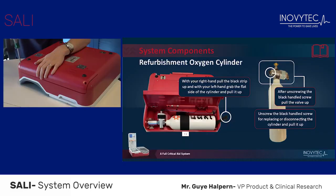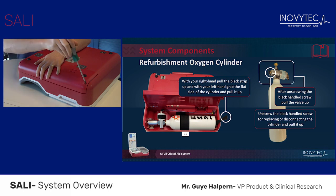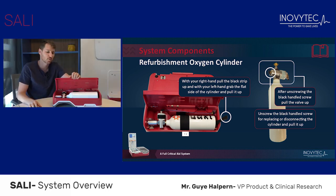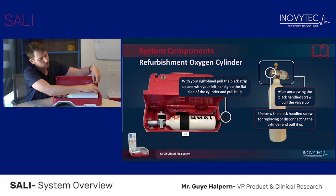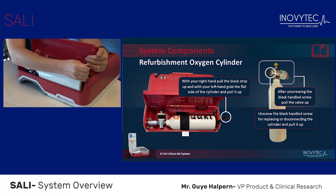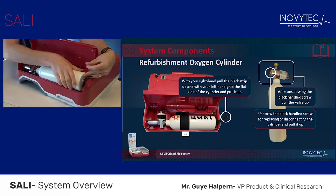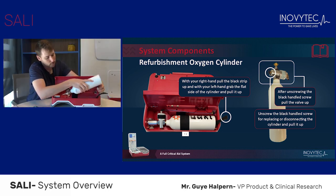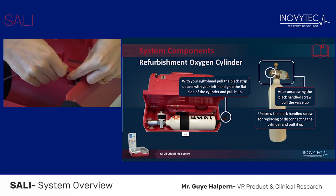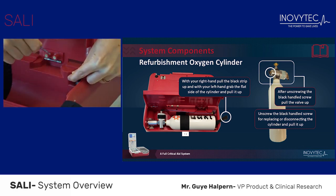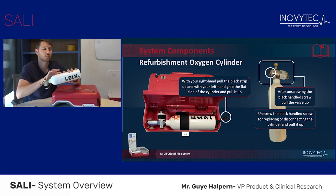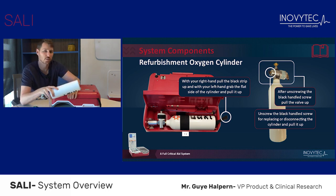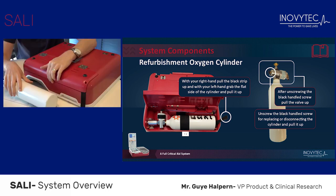To change the oxygen supply, simply unscrew the two screws located on the two sides of the oxygen panel. Open the panel door and, using the black lever, lift the oxygen cylinder, taking it out carefully. Disconnect the short tube, then simply place the new cylinder inside the compartment, like so.